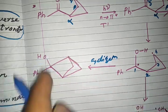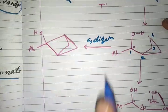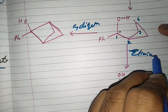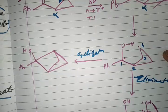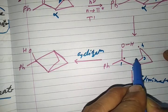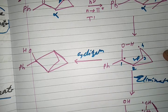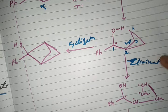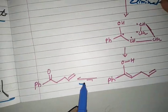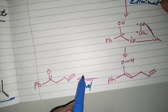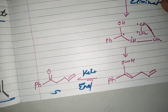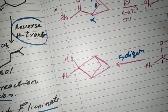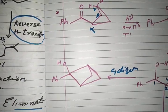Alternatively, if the diradical undergoes elimination, the alpha–beta bond cleaves, a new bond forms between the radical centers giving an alkene, and through keto-enol tautomerism the enol converts to the ketone form. These are the two products obtained from this example of the Norrish Type 2 reaction.